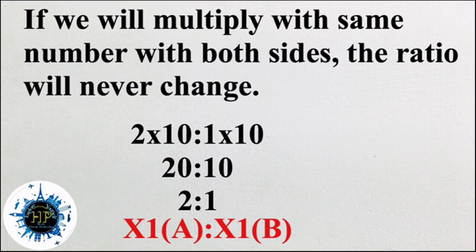If we multiply with the same number on both sides of the figures, it will never make any changes to the ratio. Here we are multiplying by 10 on both sides: 2 into 10 is to 1 into 10, giving 20 is to 10. If you divide that by 10, the ratio remains 2 is to 1 — nothing changes. That means X1 into A is to X1 into B is the same. Multiplying by the same number on both sides never changes the ratio.